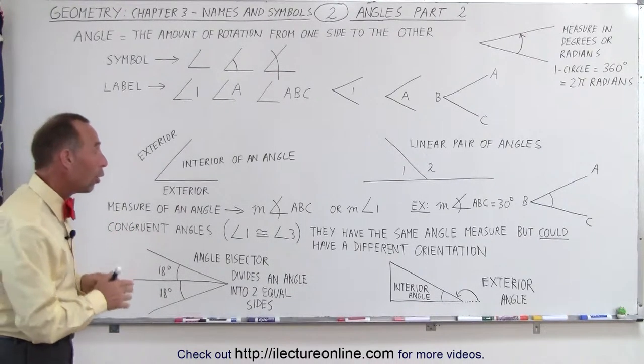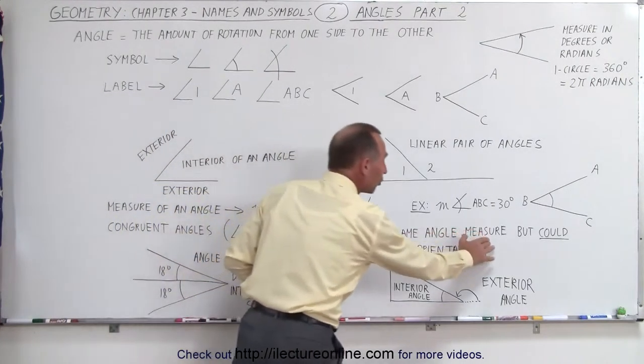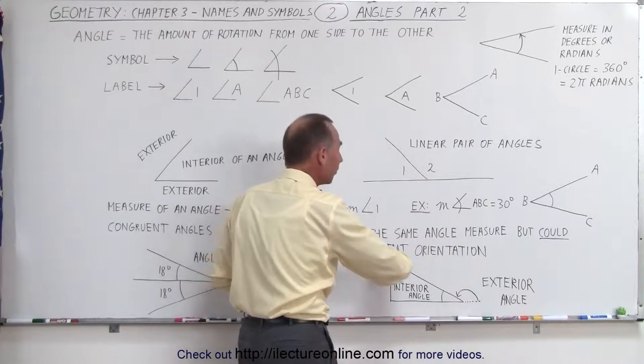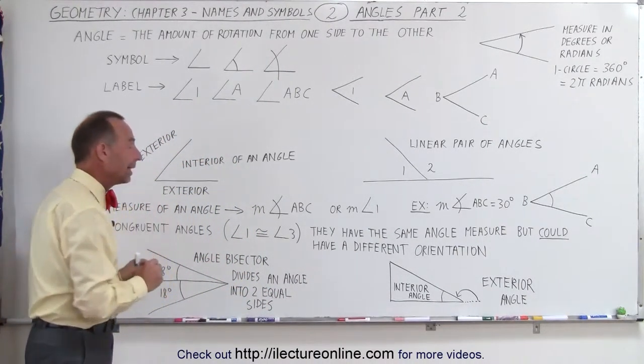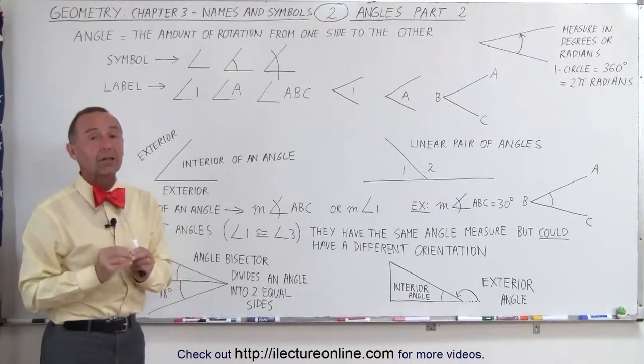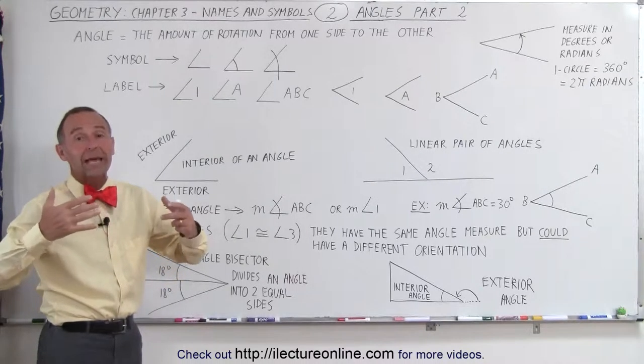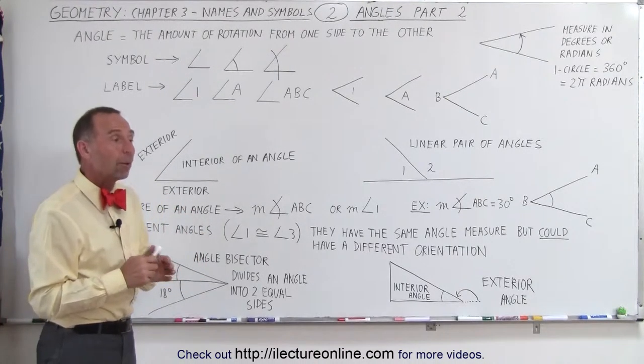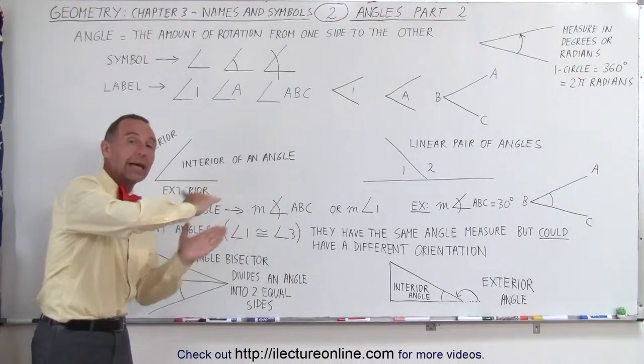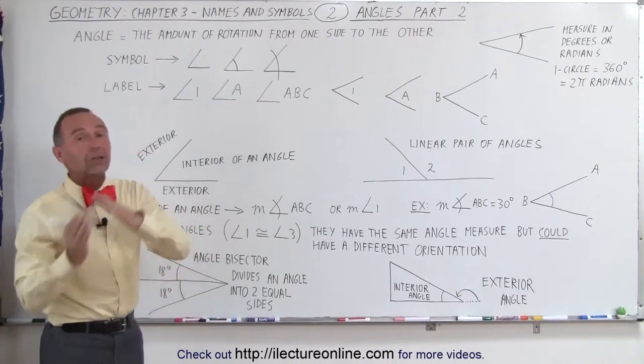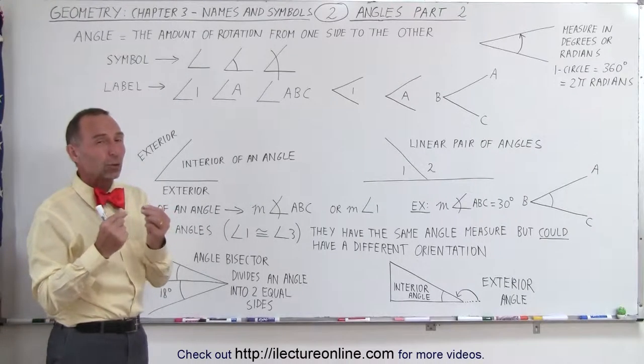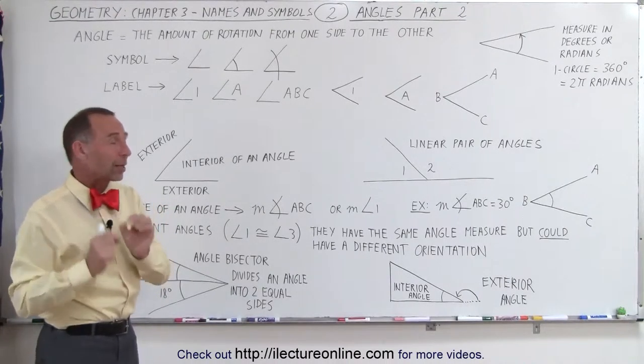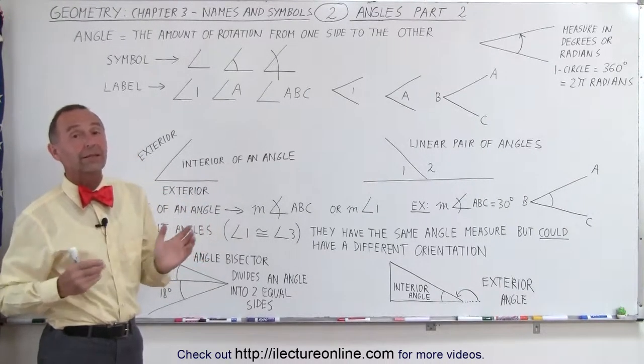Now let's talk about the word congruent. I always felt that congruent was kind of a strange word but what it means is that the angles are very similar. In other words they can have what we call the same angle measure but could have a different orientation. So in all cases when angles are congruent they definitely must have the same angle measure. Let's say they both have an angle measure of 30 degrees but one can be oriented in one direction and the other can be oriented in the other direction. They're still congruent as we call them.